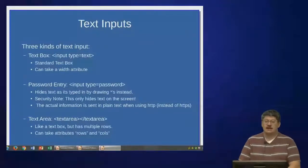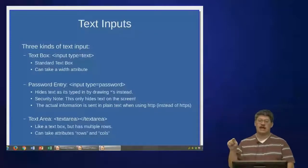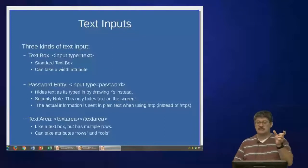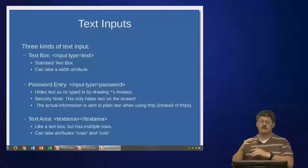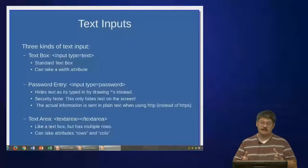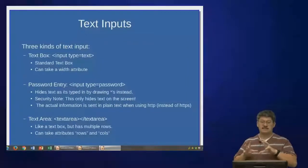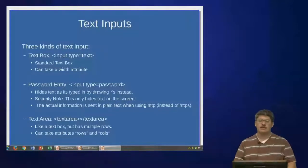There's another way to input text: the textarea. If you use a text input, you only get one line to enter data on. But sometimes we want to put in several lines of text, maybe a couple of paragraphs. The textarea element starts with a textarea tag and ends with slash textarea. Anything you put in between becomes the default text for that field. Unlike a text input, a textarea has rows and columns, and you can specify how many using the rows and cols attributes.